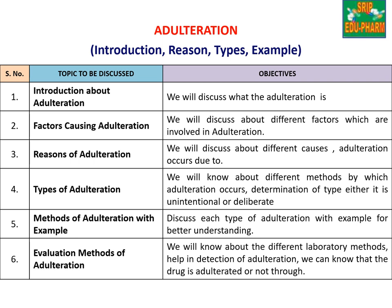These are the topics we will cover in this video. First one is introduction about adulteration — what actually adulteration is. Second one is factors causing adulteration. Third one is reasons of adulteration. Fourth one is types of adulteration — we have two types: unintentional and deliberate. Fifth one is methods of adulteration with examples.